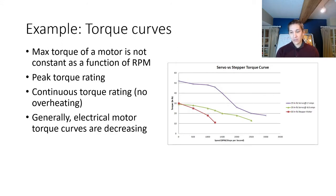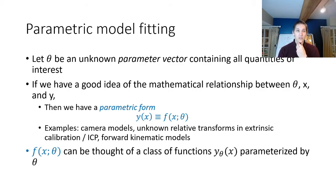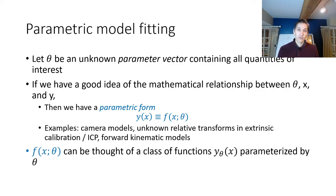In most camera calibration tasks, it's not so easy, and instead we want to do something known as parametric model fitting. Oftentimes we care about the specific parameters that define the model — for example intrinsic parameters, extrinsic parameters, or kinematic parameters. We have a very good idea of the mathematical relationships governing those parameters, the input system state x, and the observations y. So instead of producing some arbitrary function y = f(x), we have a parametric form y = f(x, θ), where θ represents the parameters.